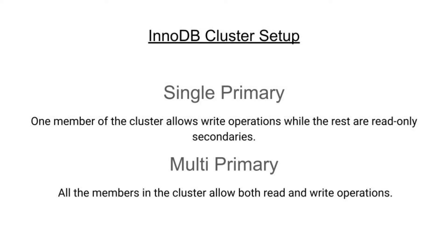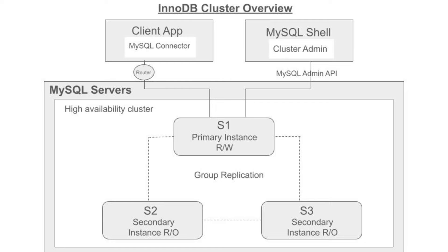Advanced users can take advantage of multi-primary mode. Here is an overview of an InnoDB cluster having three instances. This is a single primary mode InnoDB cluster having only one primary instance allowing read and write operations, and two secondary member instances allowing only read-only operations.